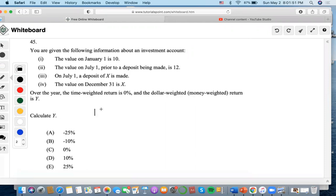We know the value is 10, with no deposits or withdrawals being made. Prior to the deposit, it's 12. Then there's a deposit of X being made, so 12 plus X. Then the value at the end is X.